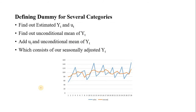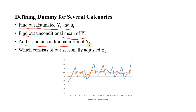There are four steps to do this analysis. First, find the estimated Yt and estimated error term — that is, Y-hat and U-hat. Second, find out the unconditional mean value of Yt. Third, add U-hat with the unconditional mean value of Y. This will give you your seasonally adjusted Yt. Let us see how we can do these things practically — it is very simple.